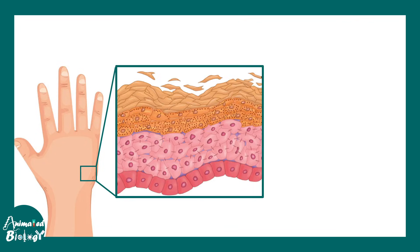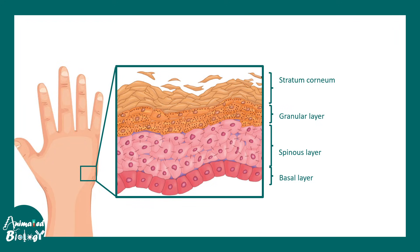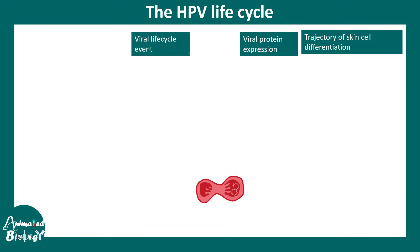To understand the basis of warts and HPV replication inside epithelial cells, we need to understand skin in a little detail. The skin has different layers: the basal cell layer, spinous layer, granular layer, and stratum corneum. HPV infects the basal layer first, and as cells migrate and mature over time, HPV also assembles viral particles progressively.